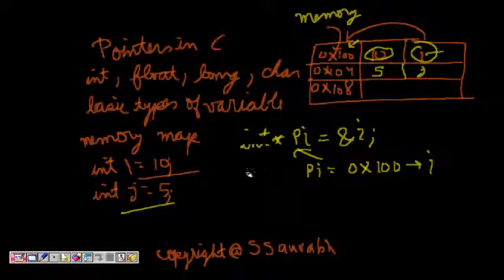Now how to access the - so pi is the pointer. We know that the value of the memory location where i is stored is 0x100.